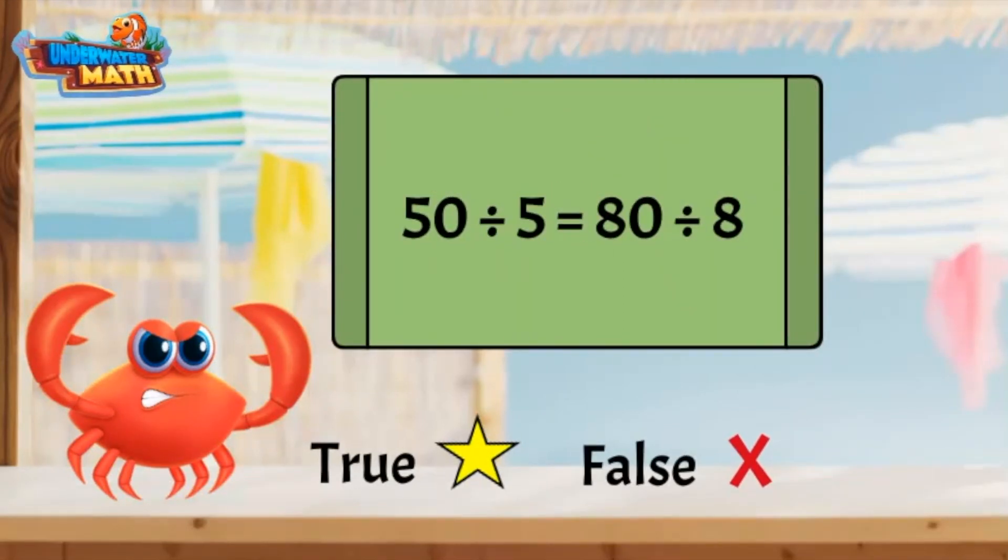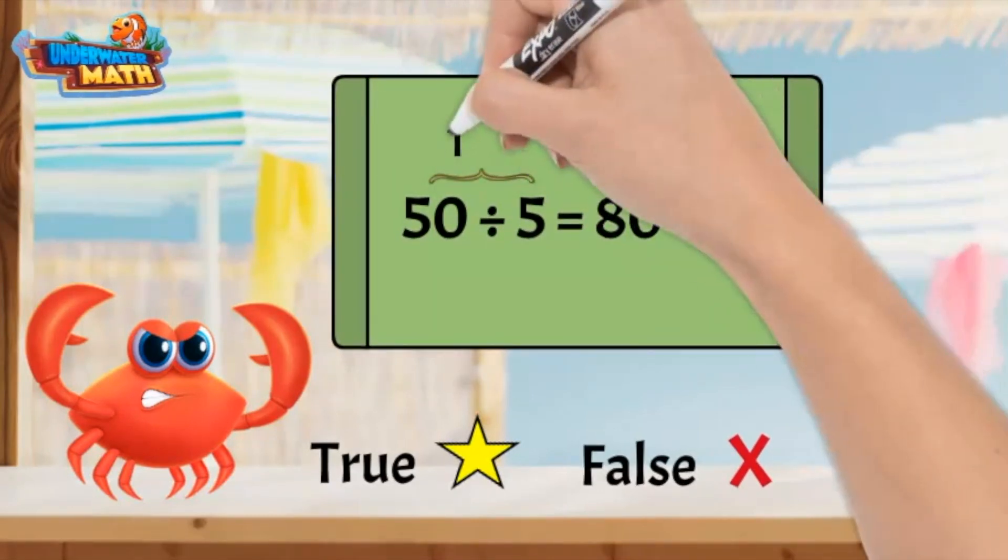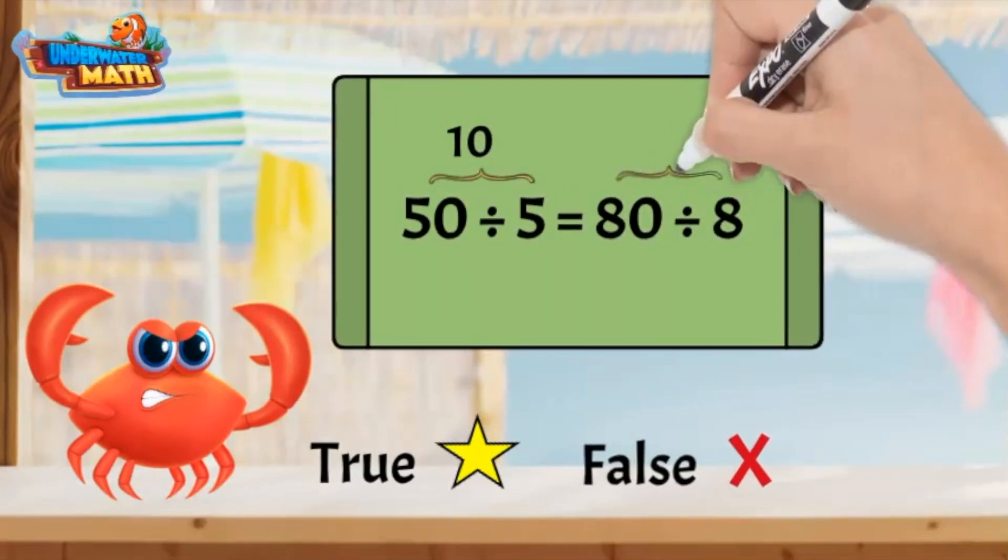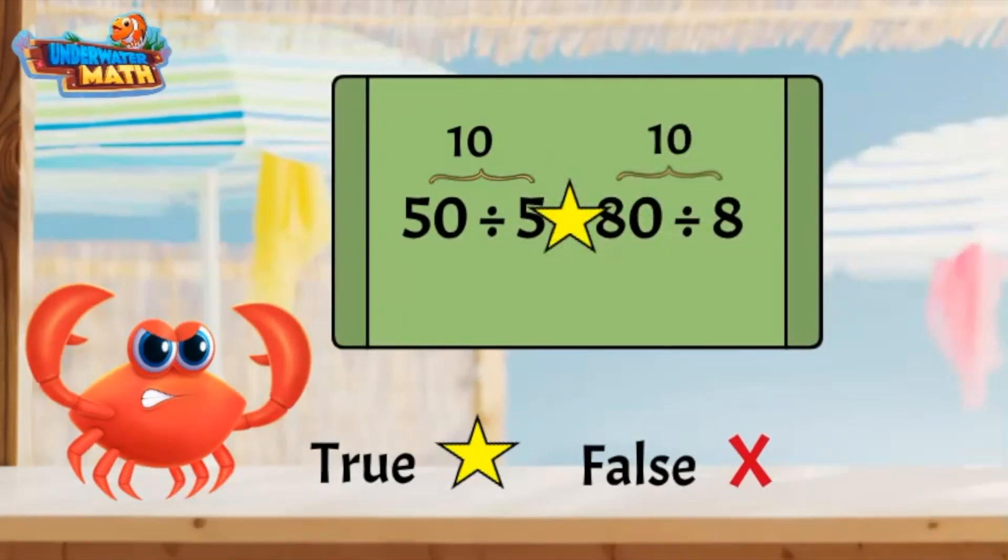Let's look at this equation: 50 divided by 5 equals 10. 80 divided by 8 equals 10. Both sides equal 10. This equation is true.